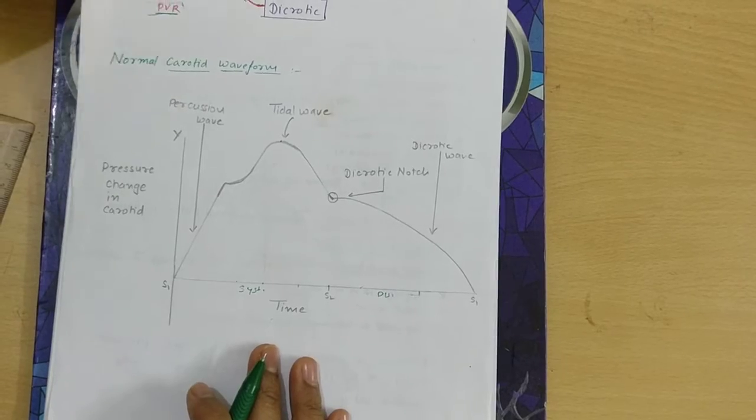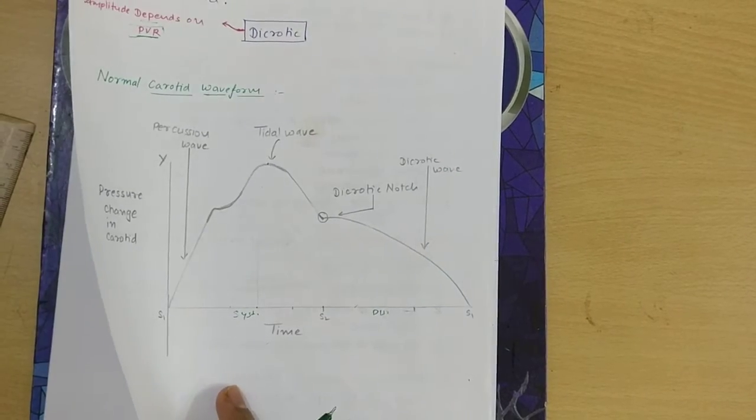This is the normal waveform, and in the next lecture we will discuss anachrotic pulse and then dicrotic pulse.